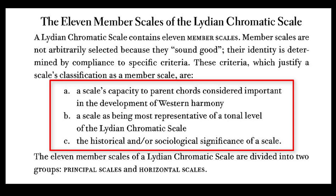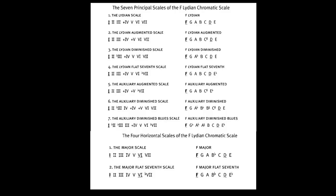Each of the 11 member scales is chosen — Russell says — for three reasons: A) a scale's capacity to parent chords considered important in the development of western harmony; B) a scale being most representative of a tonal level of the Lydian Chromatic scale; and C) the historical and/or sociological significance of a scale. Obviously C is the major scale, or horizontal scales.